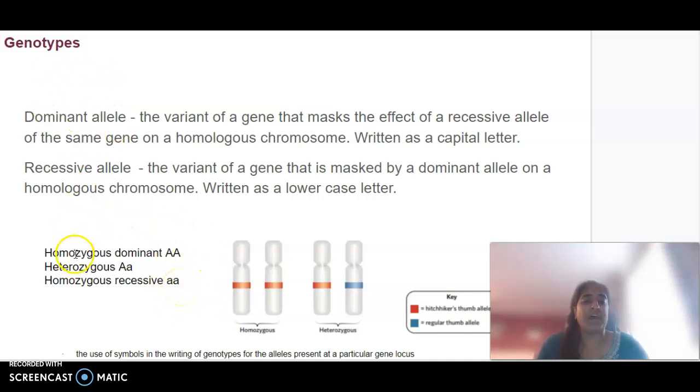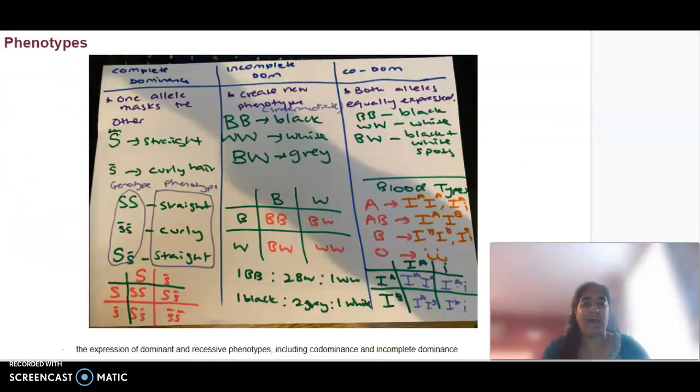We also have the words homozygous and heterozygous. Homozygous is where both of the alleles are either both dominant or both recessive, whereas heterozygous is where you've got one dominant and one recessive allele. You can see here that maybe having a hitchhiker's thumb will be one allele and having a regular thumb is not. Them being the same is homozygous, them being different is heterozygous. We need to be familiar with this vocabulary because it's going to be important when we are actually figuring out and doing some Punnett squares.